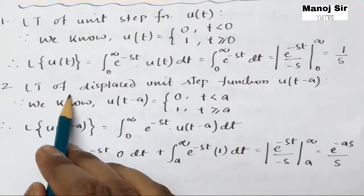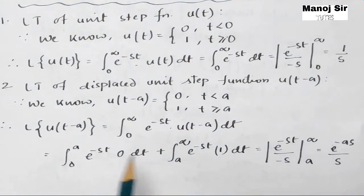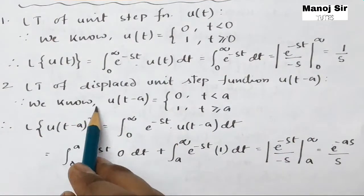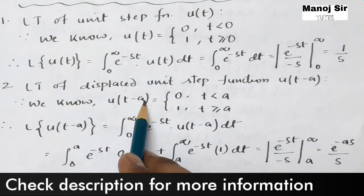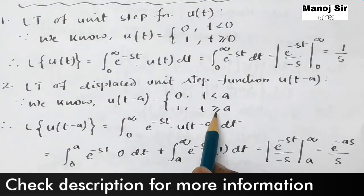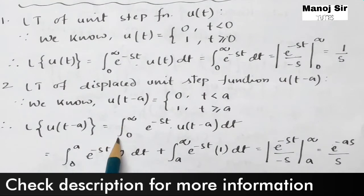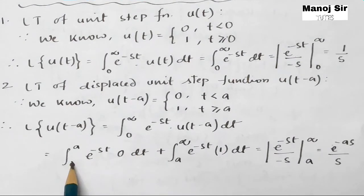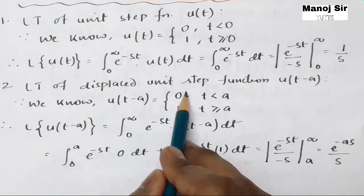Now coming to the second part: the Laplace transform of the displaced unit step function u(t minus a). Since we know that u(t minus a) equals 0 when t is less than a, and u(t minus a) becomes 1 when t is greater than or equal to a. Therefore the Laplace transform of u(t minus a) equals the integral from 0 to infinity of e to the power minus s t into u(t minus a) dt. When the limit is from 0 to a, the function u(t minus a) becomes 0.